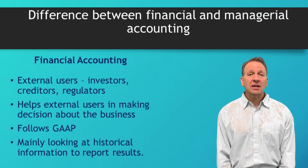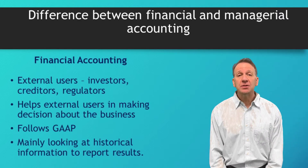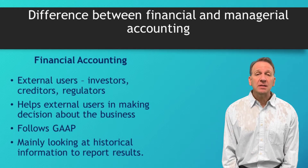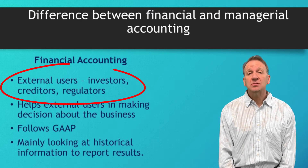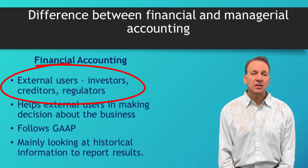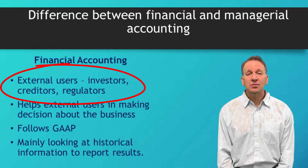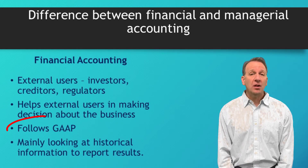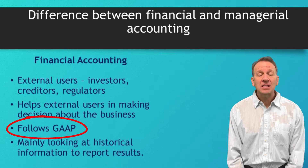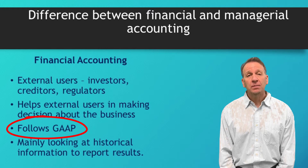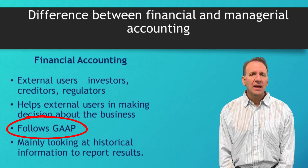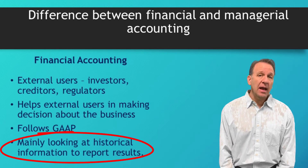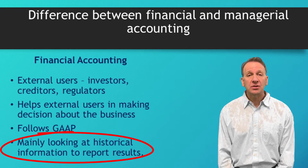Financial accounting is what we learned previously — that was probably your first accounting class. In that class, we prepared financial statements such as balance sheets and income statements, and these were being used by people external to the company to help them make decisions. These external users might have been investors, creditors, or regulators. This information must follow GAAP — Generally Accepted Accounting Principles — and it mainly looks at historical information, presenting what happened in the past.